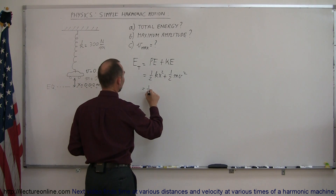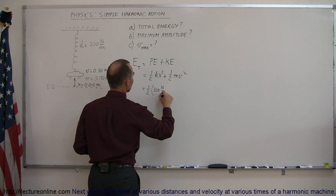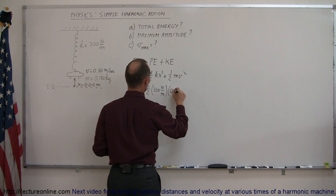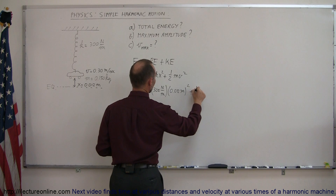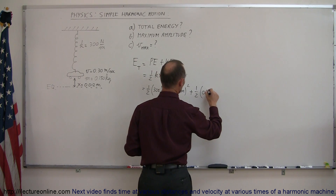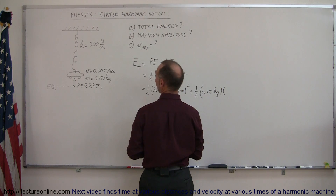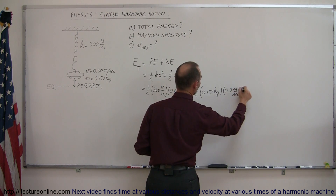This is equal to one-half times k, which is 300 newtons per meter, times x squared — x is 0.012 meters — and we have to square that, plus one-half times the mass, which is 0.150 kilograms, times the velocity squared, and the velocity is 0.3 meters per second, which we also have to square.